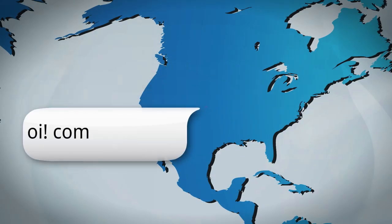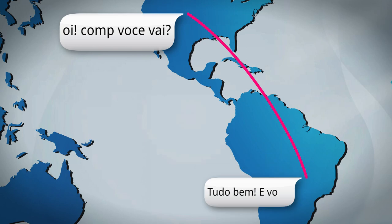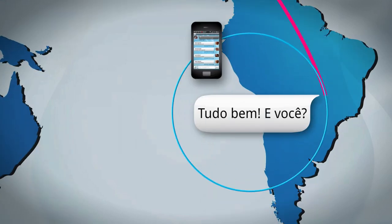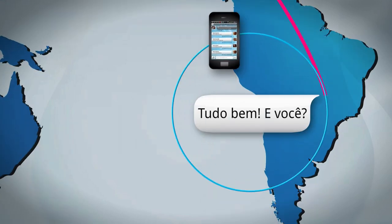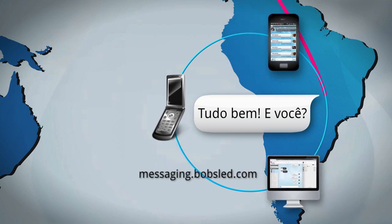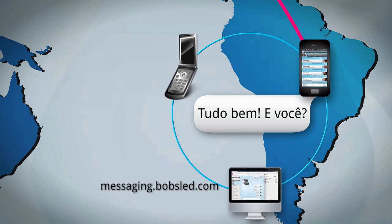To get international texts, recipients outside the U.S. need to be signed up for Bobsled on their Android smartphone, but if they have a feature phone, they can still sign up online at messaging.bobsled.com.